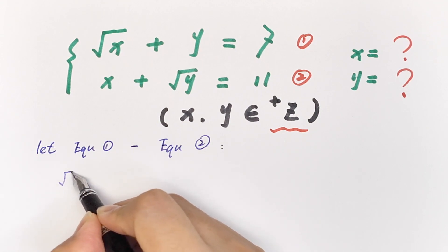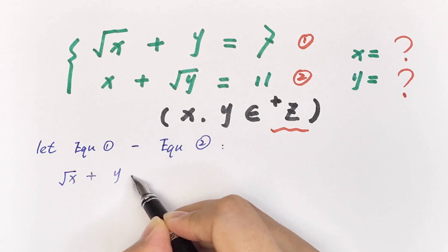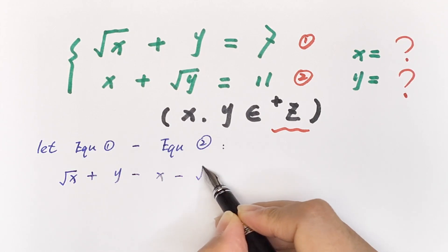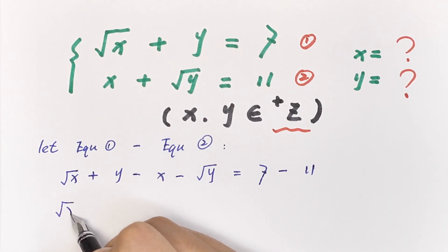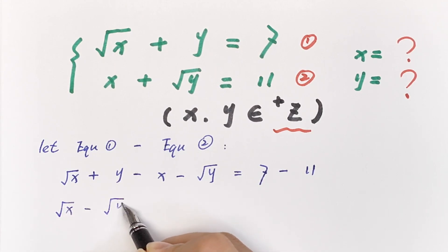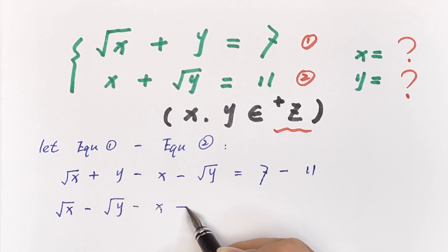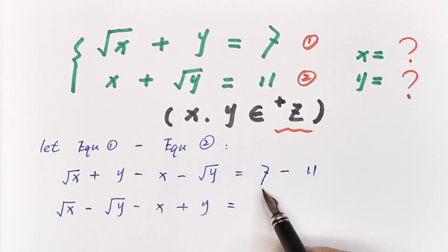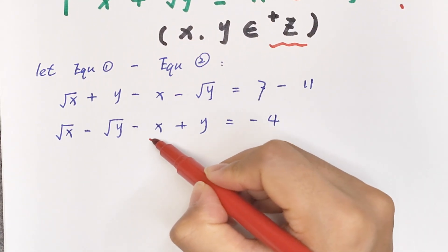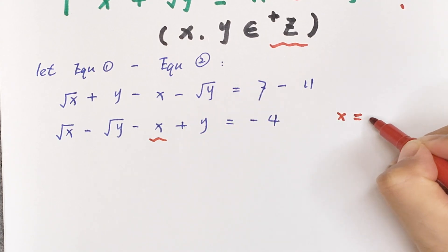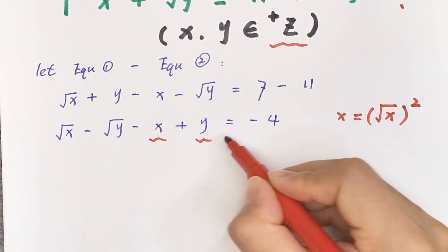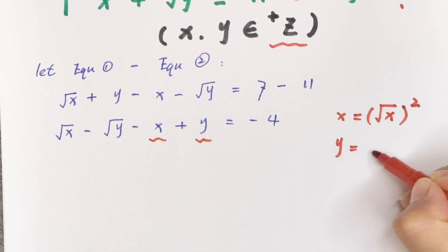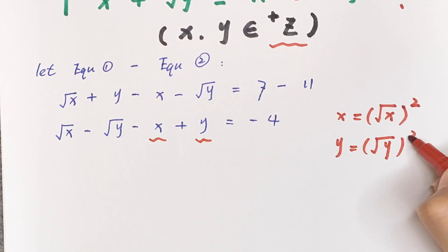So square root of x plus y, minus x, minus square root of y equals 7 minus 11, which gives square root of x minus square root of y, minus x plus y, equals negative 4. Because x equals square root of x squared, and y equals square root of y squared.